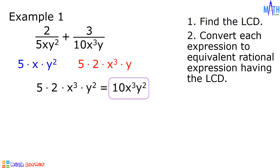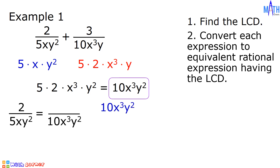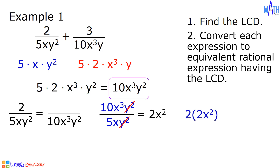After finding the LCD, step number 2: convert each expression to an equivalent rational expression having the LCD. Let us convert 2 over 5xy squared. To convert this, let us divide the LCD, 10x cubed y squared, by the denominator, 5xy squared. 10 divided by 5 is 2, x cubed divided by x is x squared, and y squared divided by y squared cancels out, giving 2x squared. Multiply 2x squared by the numerator 2: 2 times 2x squared is equal to 4x squared. And this is the numerator.